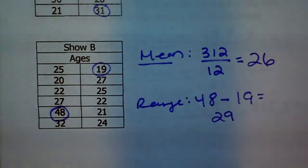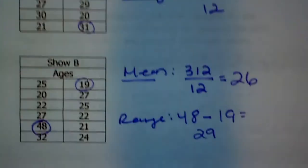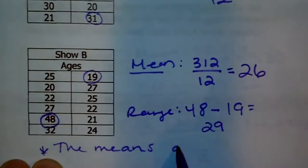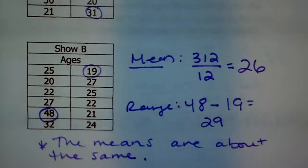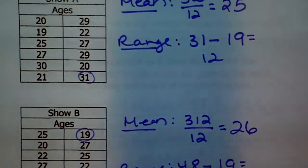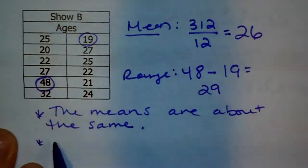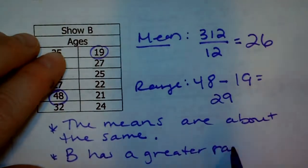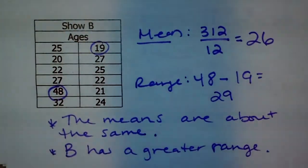The last part was to compare the results. We can see that their means are pretty close — the mean of Show A was 25 and the mean of Show B is 26, so the means are about the same. However, the range for Show A is 12 and the range for Show B is 29. Show B has a greater range, meaning the contestants' ages are more spread out on Show B.